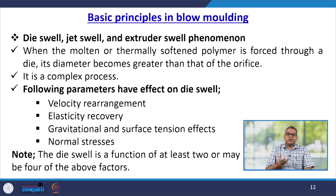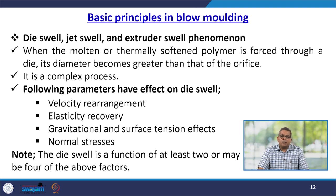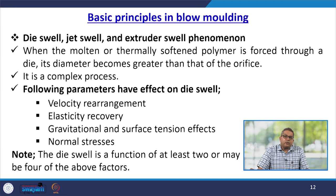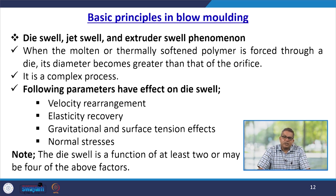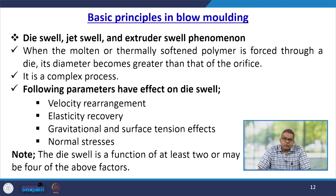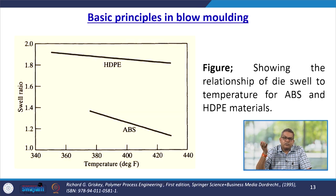Die swell, jet swell, and extruder swell are important phenomena in blow moulding. When a molten or thermally softened polymer is forced through a die, its diameter becomes greater than that of the orifice — a very complex process. The parameters affecting die swell include velocity rearrangement, elasticity recovery, gravitational surface tension effects, and normal stresses. Die swell is a function of at least 2 and up to 4 of these factors.